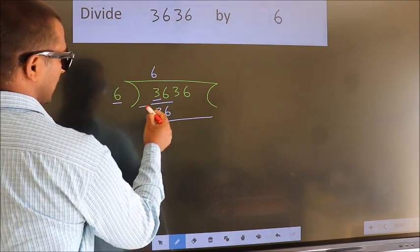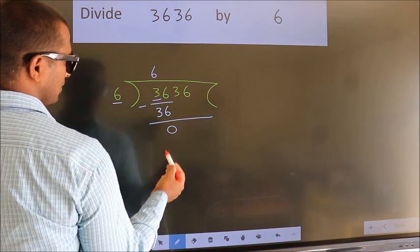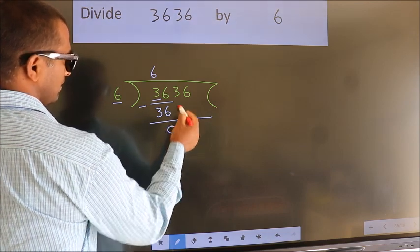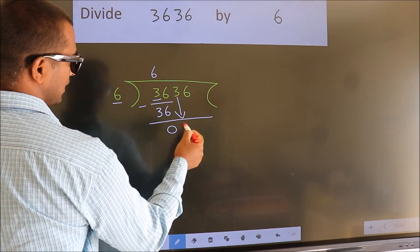Now we should subtract. We get 0. After this, bring down the beside number. So 3 down.